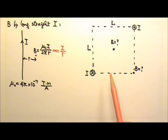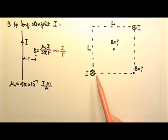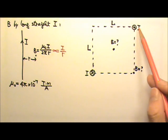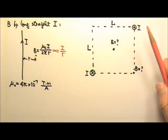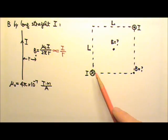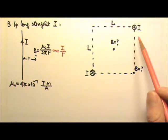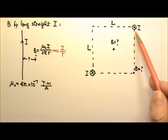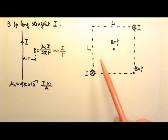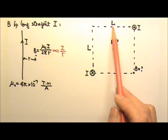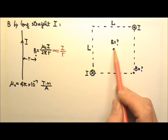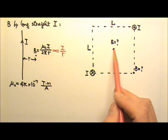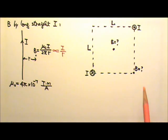Let's say we have two long straight currents perpendicular to the page. This current goes out of the page, and this one goes into the page. The two currents are at the opposite corners of a square. Each side of the square is l, and we're looking for the magnitude and direction of the magnetic field at the center of the square and at this corner of the square.